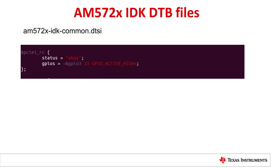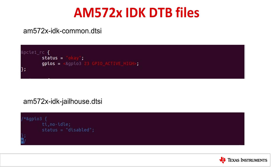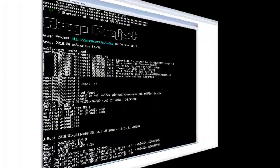In the am572x-idk-common.dtsi file, it shows that the PCIe root complex is using GPIO3. However, in the am572x-idk-jailhouse.dtsi file, GPIO3 is disabled. Since we are not running the jailhouse demo, we need to get GPIO3 back for PCIe by removing the GPIO3 entries in the jailhouse DTS file. The DTS file needs to be rebuilt after the GPIO3 entry is removed from the jailhouse configuration, then transfer the new DTS file to the file system and boot with it.